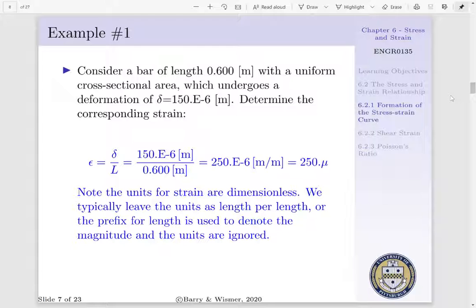For us to do this, we're going to recall strain is equal to our deformation per length, where we'd have 150 microns divided by our initial length of 0.600 meters. Or we'd have a strain of 250 e to minus 6 meters per meter. Now, we know that meters per meter is a dimensionless quantity, so we can report this as 250 mu.